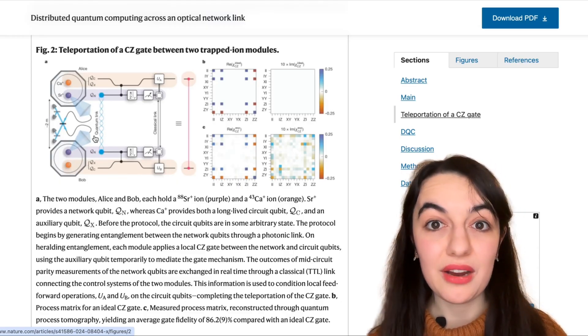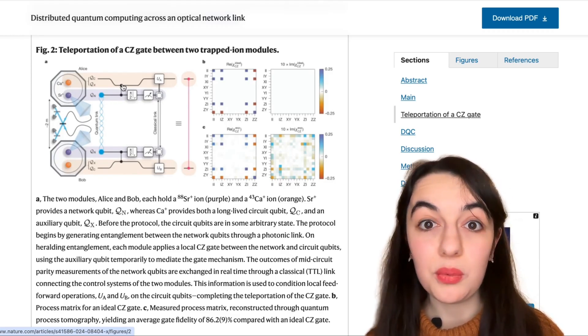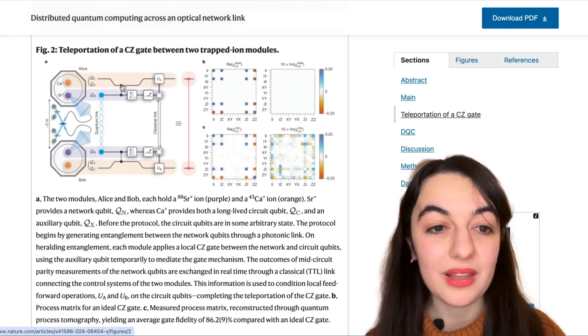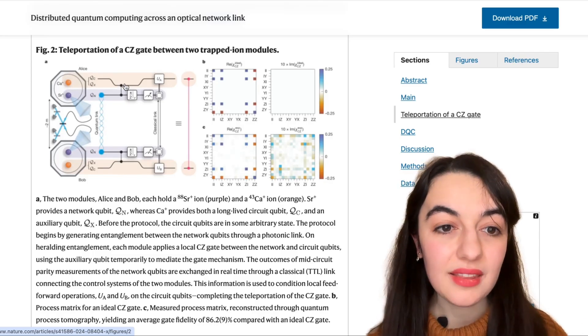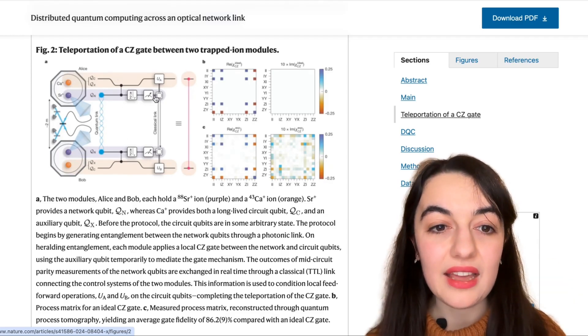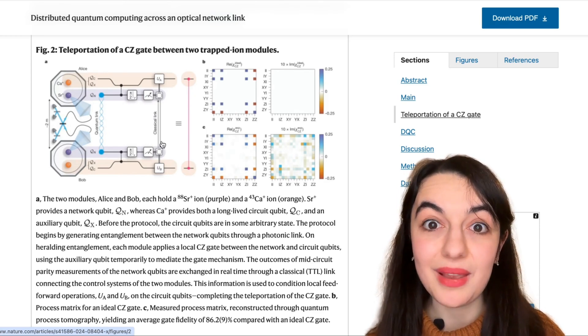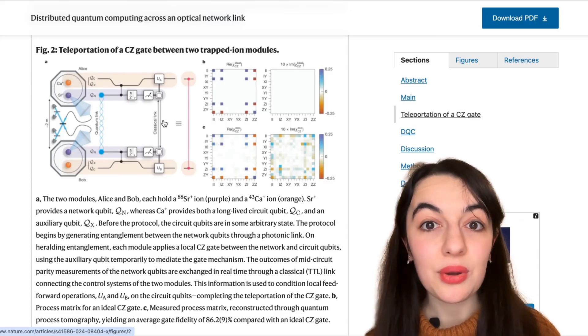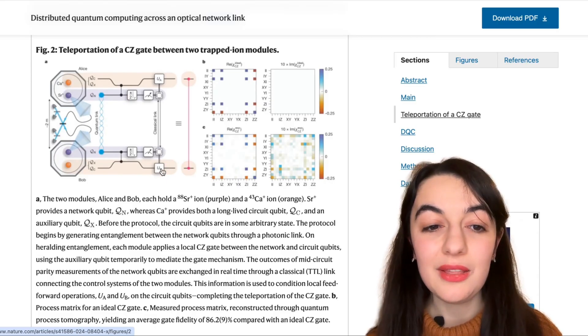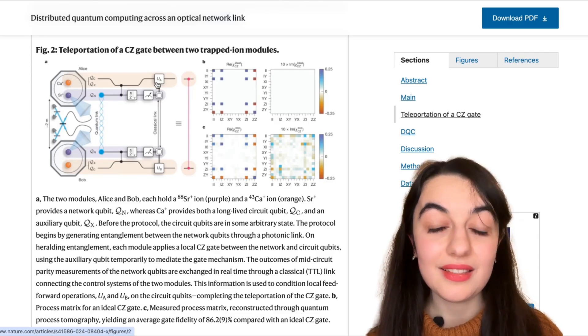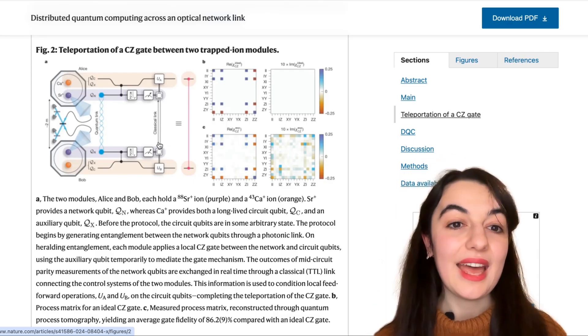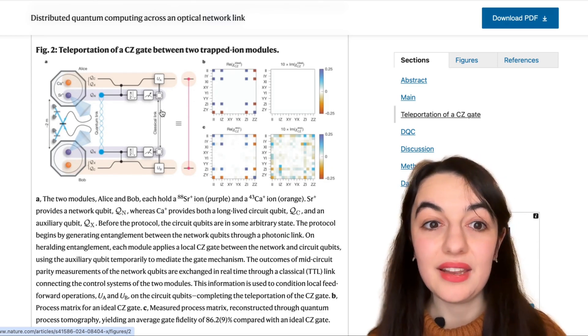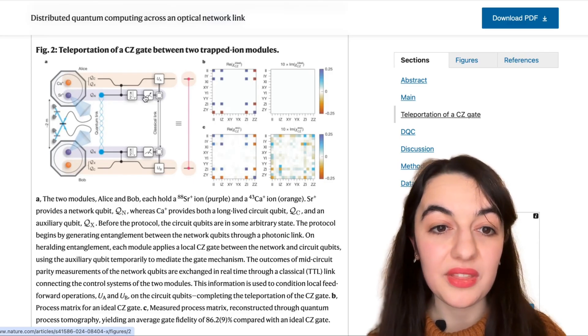Alice and Bob start with this entangled pair of qubits where they have one each. And then by doing some quantum gates individually between their entangled qubit and their data qubit, the one that we want to do operations on, they apply these quantum gates individually in their own locations. Then they have these measurements with classical information when they measure these entangled qubits so they can exchange classical information here. And depending on the outcomes of that classical information, they apply some quantum gates to their data qubits. So Alice applies this gate to her qubit and Bob applies this gate to his qubit, making use of this classical information exchange between them.